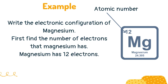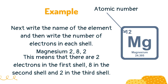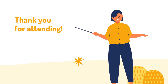First find the number of electrons that magnesium has — magnesium has 12 electrons. Next, write the name of the element and then write the number of electrons in each shell: magnesium 2, 8, 2. This means there are 2 electrons in the first shell, 8 in the second shell, and 2 in the third shell.